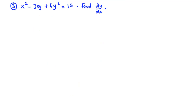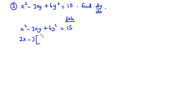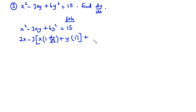Now let's solve question 3. We have x squared minus 3xy plus 6y squared equals 15, and we are asked to find dy/dx. When you differentiate x squared you get 2x. For the 3xy term we apply the product rule: we maintain x and differentiate y, giving 1 multiplied by dy/dx, plus we maintain y and differentiate x giving 1. When you differentiate 6y squared you have 12y times dy/dx. When you differentiate the constant 15 you get 0.